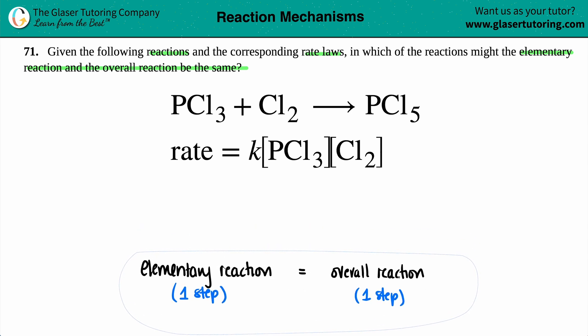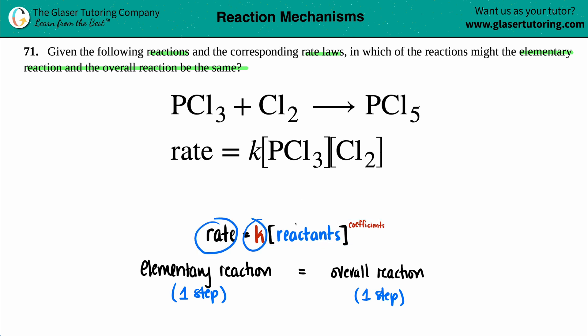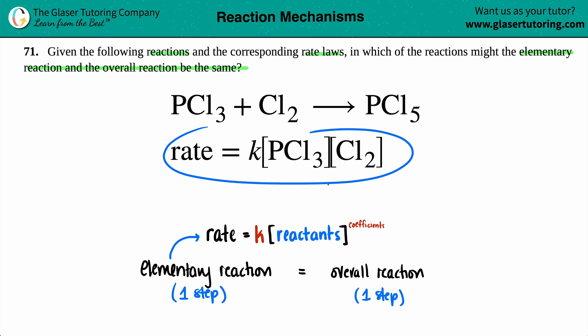When you're dealing with an overall reaction of one step, there's a trick with the general rate law formula — but we can only use this when talking about elementary steps or elementary reactions. Normally, rate equals K times the reactants raised to their orders. But when dealing with only a one-step process, we can assume that the exponents are equal to the coefficients.